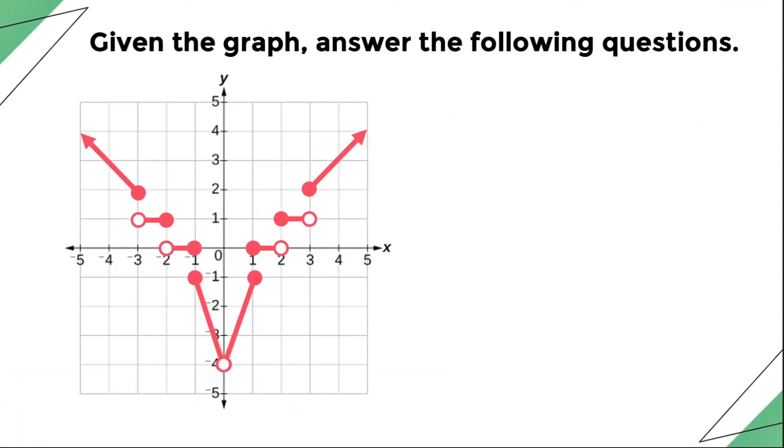For this example, let us compute for the value of x if f(x) is equal to 1. We know for a fact that f(x) is the same thing as the y-coordinate of the point. By analyzing the graph, there is a set of x values corresponding to y is equal to 1.